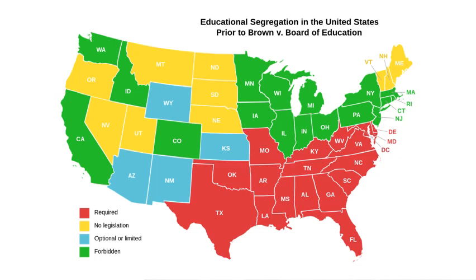Brown versus Board of Education addresses the much more controversial topic: the education of young children — elementary and high school children — which was far more controversial than universities. Before Brown was decided, segregation was only required in the southern states and in Oklahoma. Some states had no legislation at all regarding it, others had limited or optional segregation depending on the school district, and many states — the northern and some western states — forbade racial segregation in schools. If you looked at the majority of the country, most had realized that segregation was either unconstitutional or immoral or both, but there was a big pocket of southern states still holding to segregation.